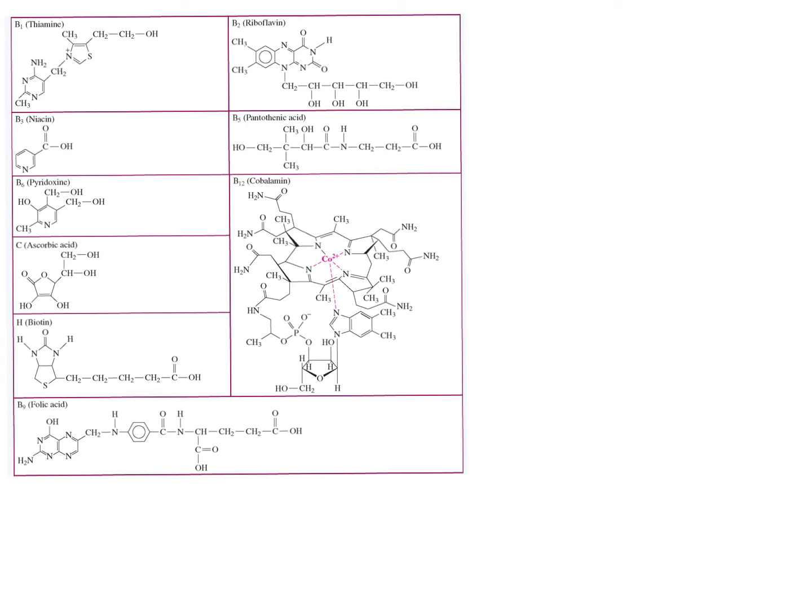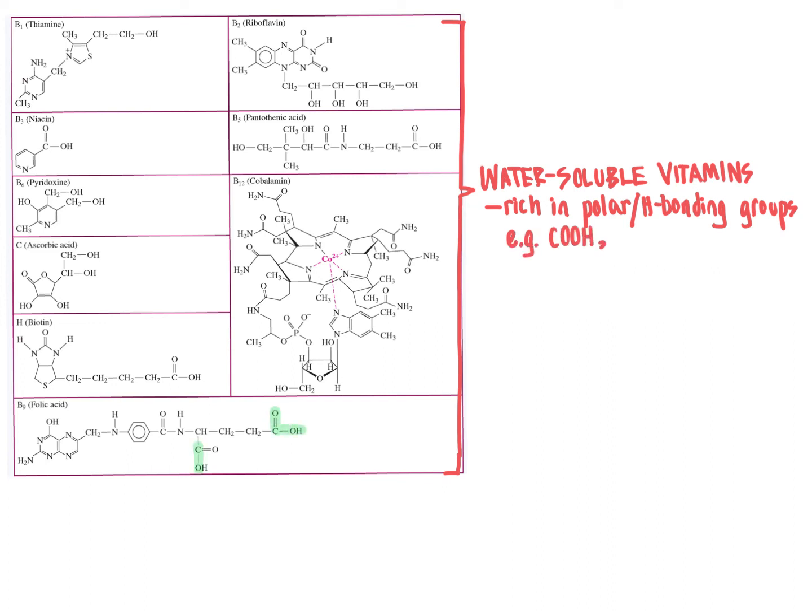Now let's take a look at some examples of common water-soluble vitamins shown here in all of these images. We will notice the common theme amongst these structures is that we see an abundance of polar groups dominating the molecules. For example, COOH, carboxylic acid groups, are a common feature across many of these structures. I'm not highlighting all of them, just highlighting a few to give you an idea of that. We also commonly see hydroxy groups, alcohols that is, showing up throughout these molecules as a very common theme.